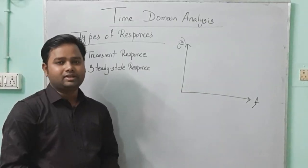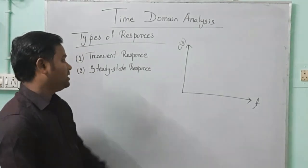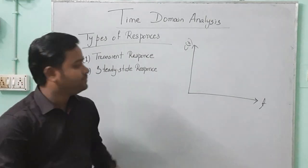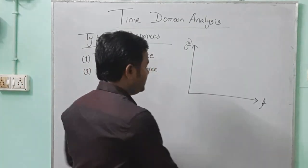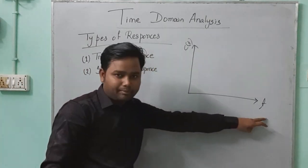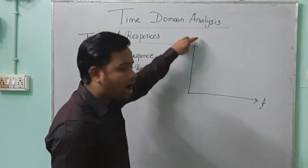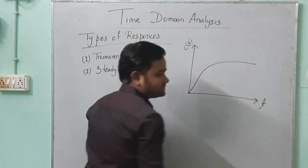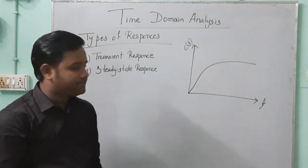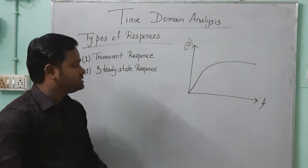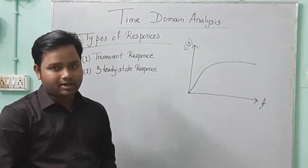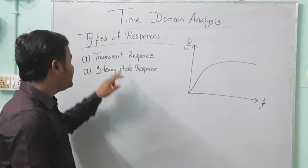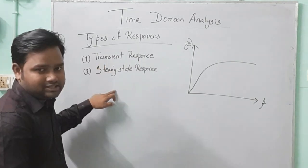Now we will study the types of responses. In time domain analysis, I will plot a graph which depends upon time. On the x-axis I have taken time T and on the y-axis the output signal C of T. Here we can get two types of response: one is transient response and one is steady state response.